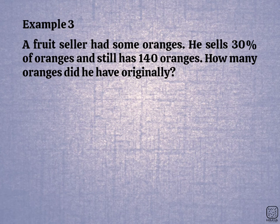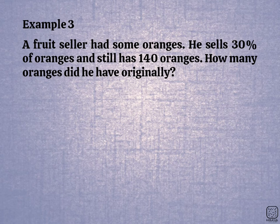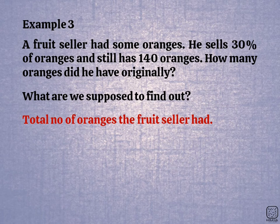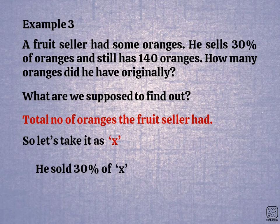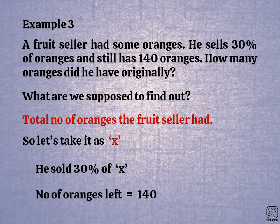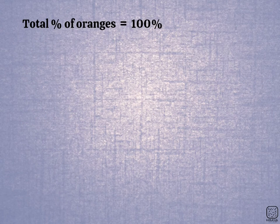Example 3: A fruit seller had some oranges. He sells 30% of the oranges and still has 140 oranges. How many oranges did he have originally? A fruit seller sold 30% of his oranges, and the remaining ones are 140 oranges. This will be the number of oranges for x. A fruit seller sold 30% — the total percentage of oranges is 100%.